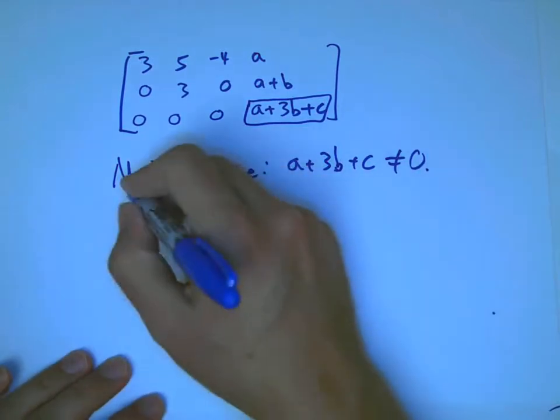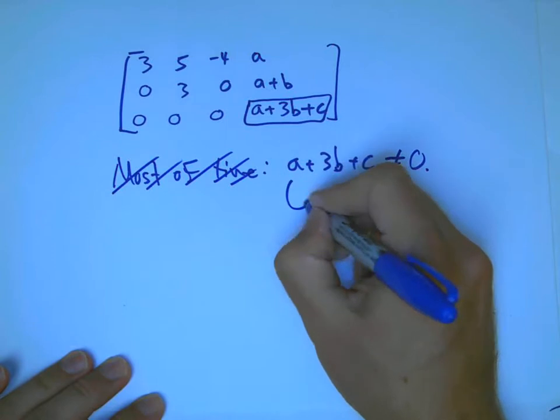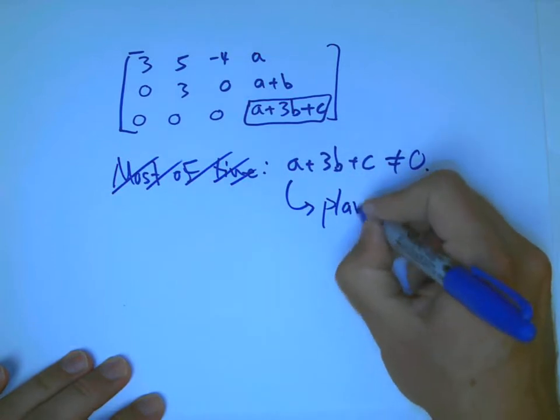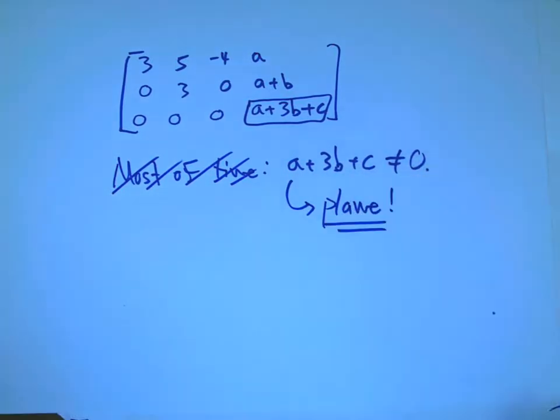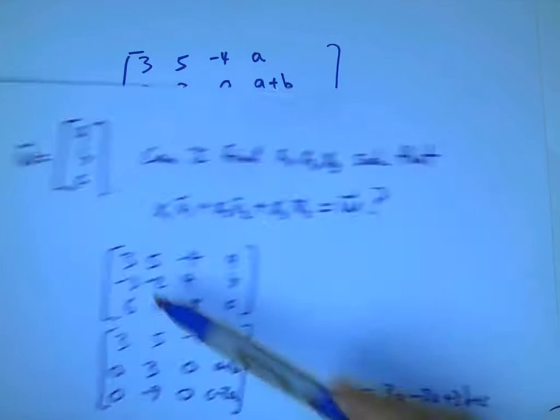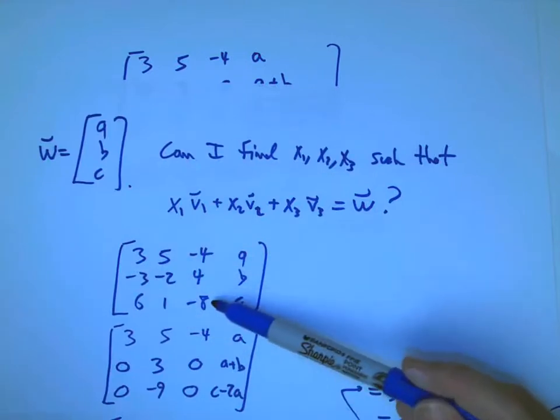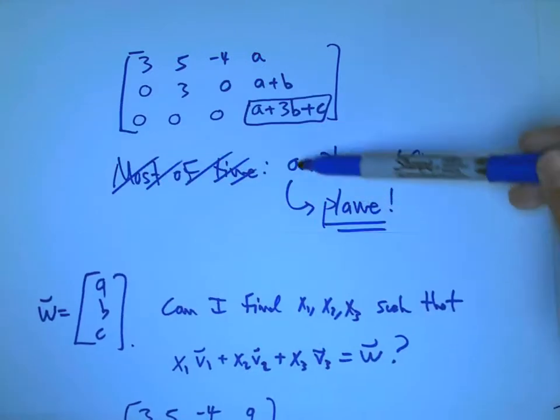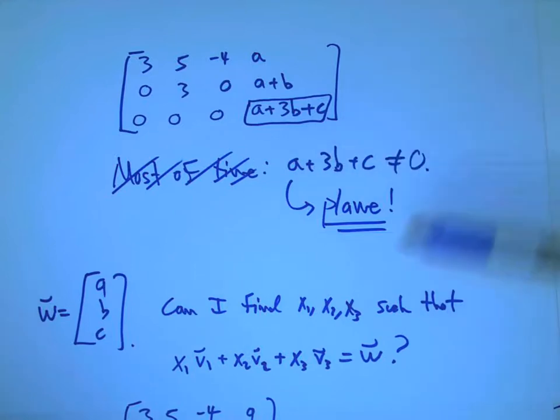And so it's a moot point as to what x1, x2, and x3 would be. They don't exist. And what can I say a little bit more precisely than this? I can say that's a plane. That specifies a plane in three-dimensional space.